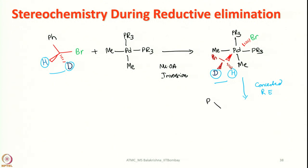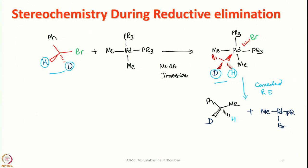What we get is the methyl group placed here, H here, and D here. So during reductive elimination, retention of configuration is observed when using chiral molecules.